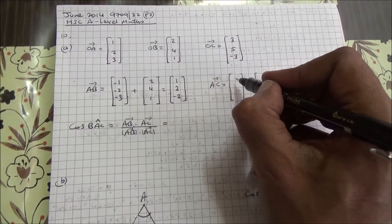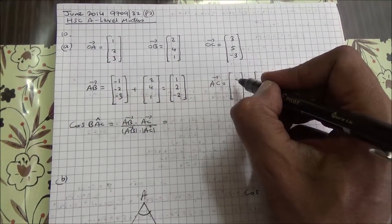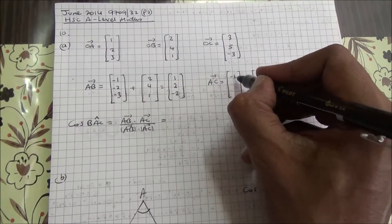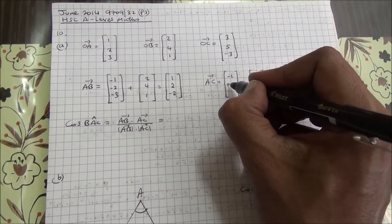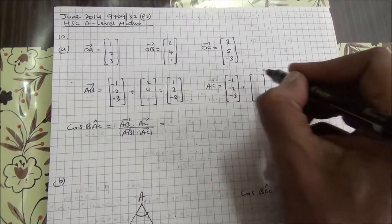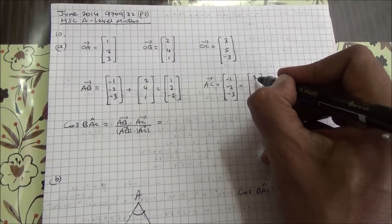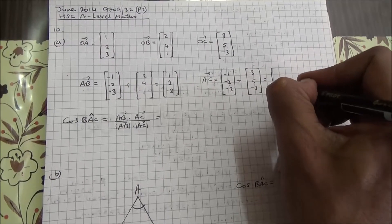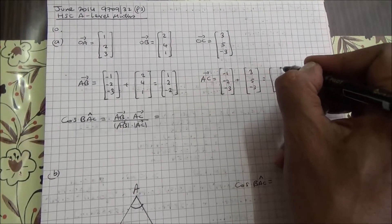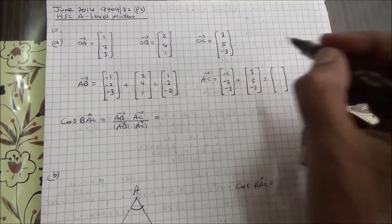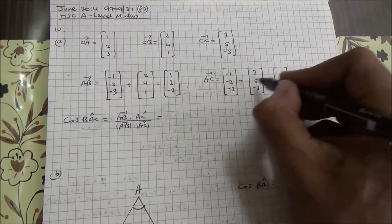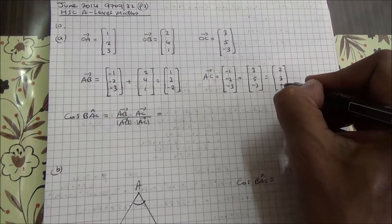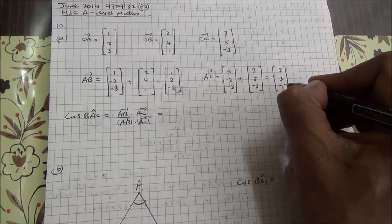Similarly, for AC, we're going to go through AO plus OC. And AO is minus 1, minus 2, minus 3. Plus OC, we have it as 3, 5, and minus 3, as given. So you add that up, you're going to end up with 2, 3, and minus 6.